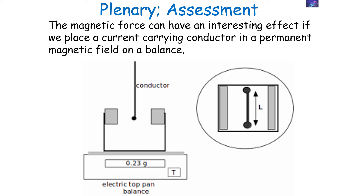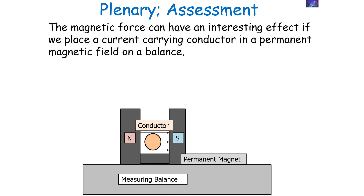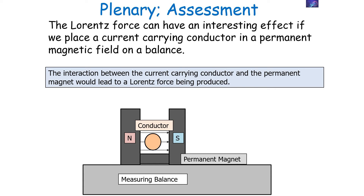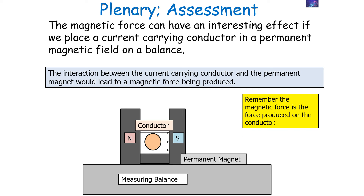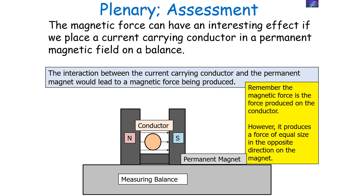The magnetic force we've calculated with that equation can have an interesting effect if we place a current carrying conductor in a permanent magnetic field on a balance. We place a permanent magnet on a balance and have a conductor suspended inside the permanent magnet. The interaction between the current carrying conductor and the permanent magnet produces a magnetic force. In this arrangement, it's the permanent magnet — not the conductor — that is touching the balance, so it's the weight of the permanent magnet being measured. The magnetic force acts on the conductor, but by Newton's third law, it also produces an equal and opposite force on the permanent magnet.